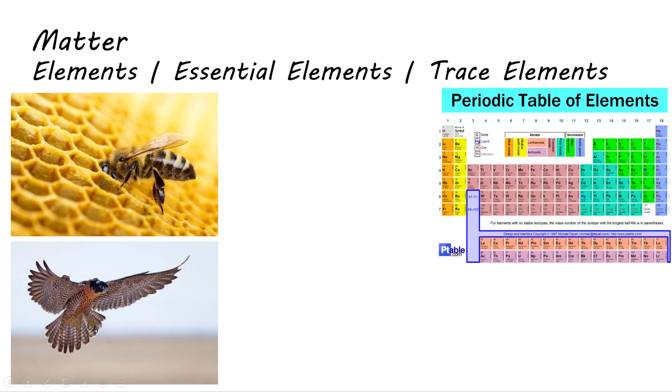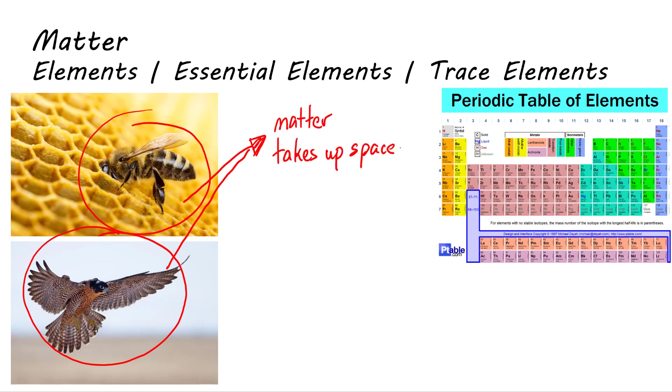So, to understand how living things work, we first have to understand how the things that make up living things work. Living organisms are made of matter, which is anything that takes up space and has mass. Matter is made up of elements, which is a substance that cannot be broken down to other substances by chemical reactions. Some examples of elements you are familiar with are oxygen, nitrogen, carbon, and hydrogen. These are actually important for an organism to live a healthy life.